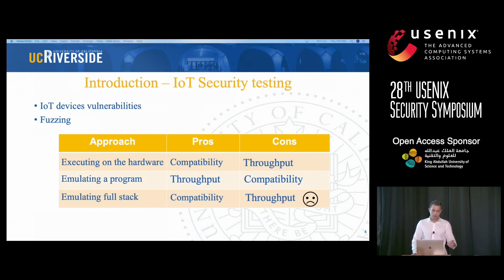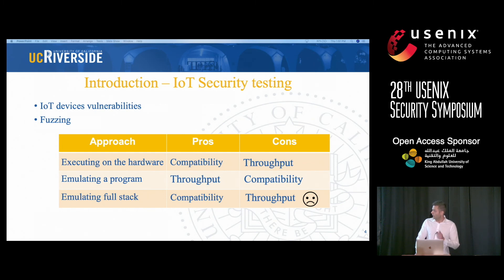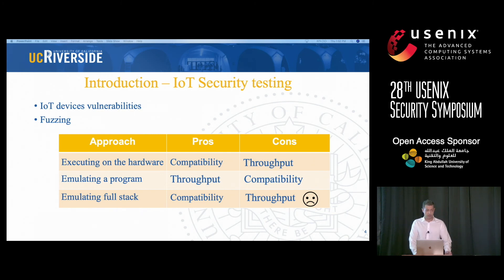But how do we go about executing an IoT program? The first option is executing on the hardware. With that, we have a throughput problem. Because we are executing on the hardware, the hardware is slow, so we get a low throughput. And throughput is very important for fuzzing.